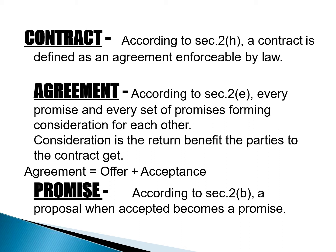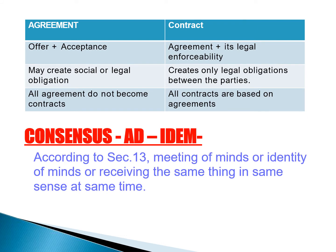An agreement must have two things: first is offer plus acceptance. If we are offering someone and the other party accepts that offer, then we call it an agreement. Next is promise — according to Section 2, subsection B, a proposal when accepted becomes a promise. Agreement requires offer plus acceptance. A contract is formed when there is an agreement plus its legal enforceability — meaning it is legally enforceable.